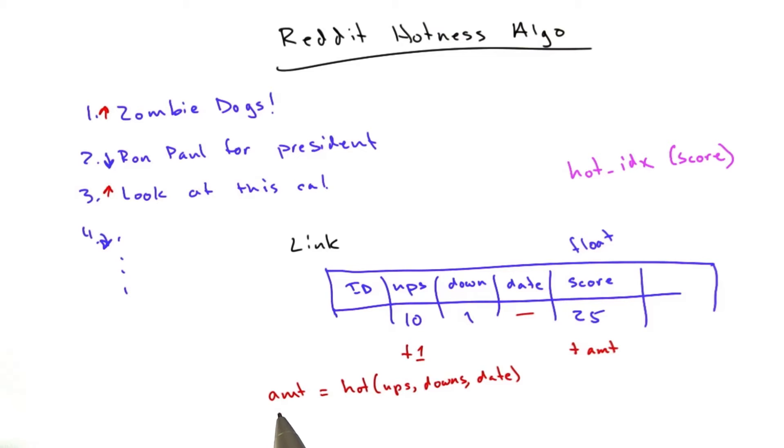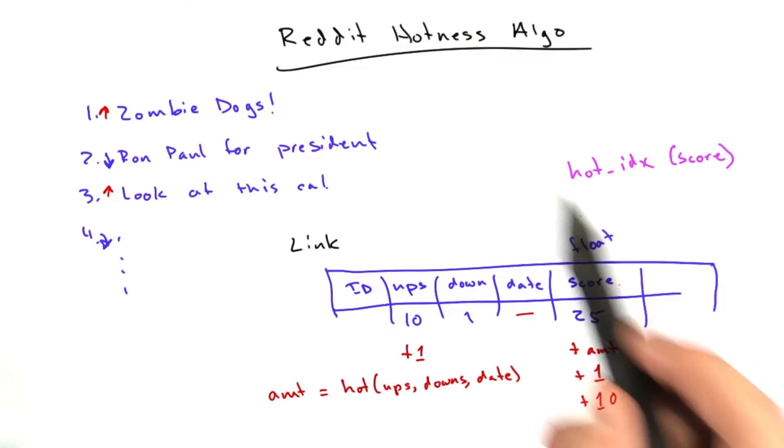And so what happens is over time, the value of an upvote increases. So an upvote today might be worth 1 point, and that same upvote tomorrow on the same link will be worth 10 points. And what this causes is it causes our scores, over time, to be constantly increasing. So newer links always appear, always have higher scores than older links.